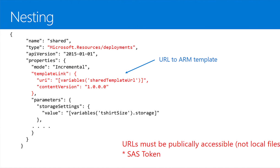Audience question on nested templates: can you loop the call to a child template — like use copy index on a nested deployment instead of looping the VM creation inside the template? The speaker isn't sure — it would be interesting to try and see if you can add a copy index there. It might work, but it hasn't been tested.